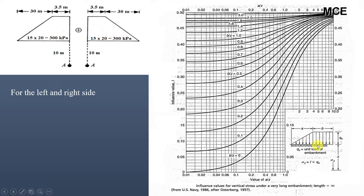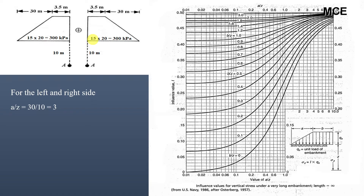For point A, since both the left and right side embankments are symmetric, the vertical stress increase at A is the sum of the stress increase due to the left and right sides. For both sides, a/z = 30/10 = 3, and b/z = 3.5/10 = 0.35. We need the influence value for a/z = 3 and b/z = 0.35.